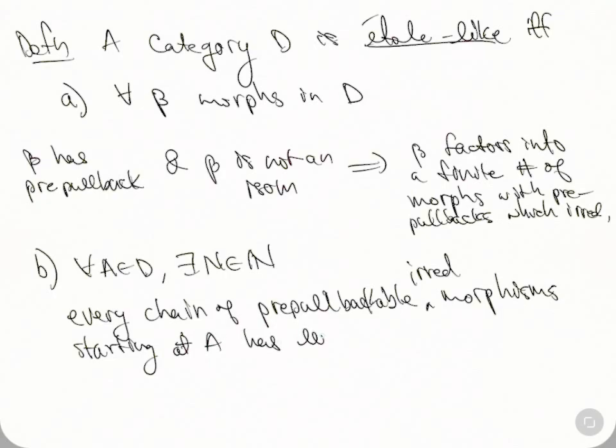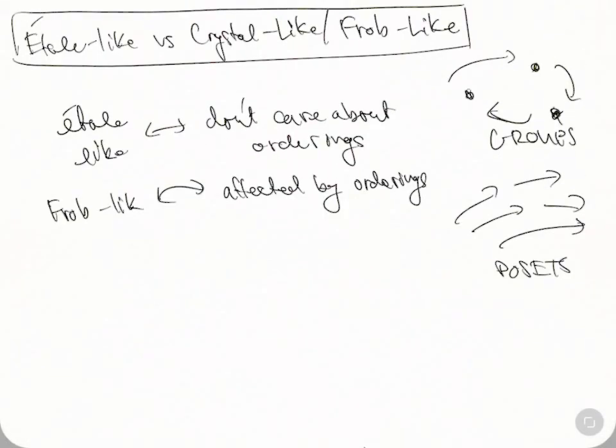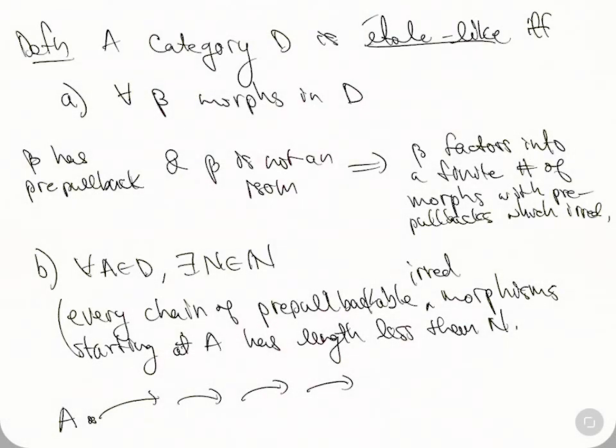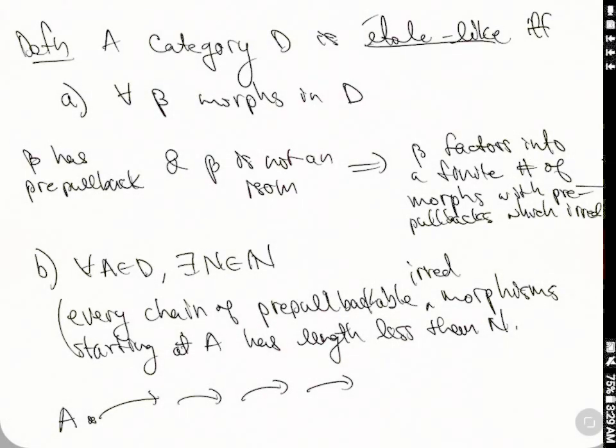has length less than N. You can't just have these infinite length things where all these are irreducible. Eventually something's got to give for these pre-pullbackable things. This will force it to be swirly, like in the original picture here. That's all I wanted to say in this video. Thanks for watching.